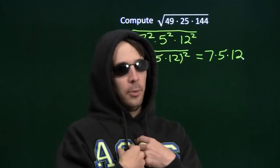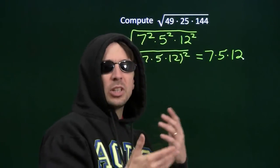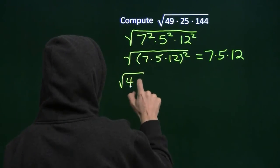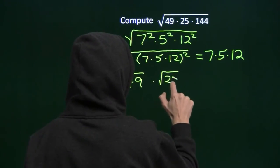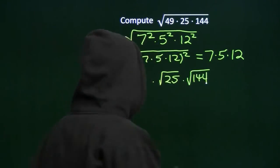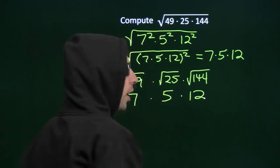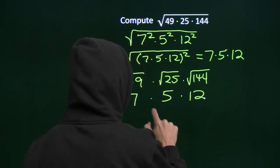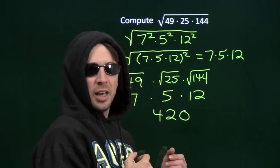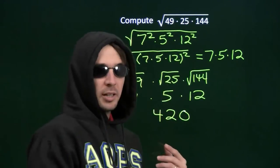That way's kind of boring. Check out my way — my way's really cool. I see the square root of this product here, and I see that all those numbers are perfect squares. I'm just going to break that up into a product of square roots: square root of 49 times the square root of 25 times the square root of 144, because these square roots are easy to compute. Square root of 49 is 7. Square root of 25 is 5. Square root of 144 is 12. 5 times 12 is 60, 60 times 7 is 420. You don't see why we can take the square root of this product and break it up into a product of square roots?